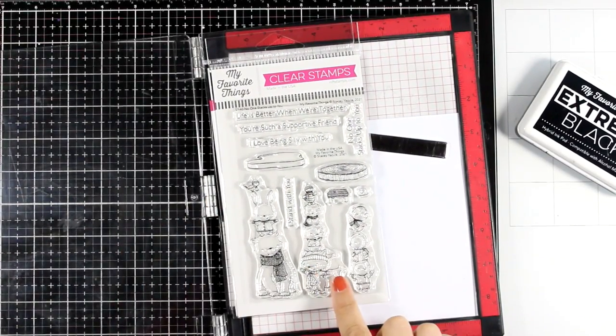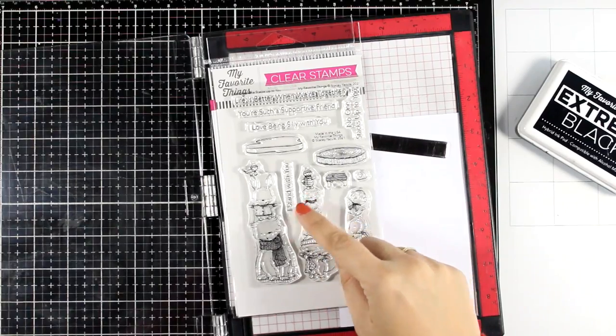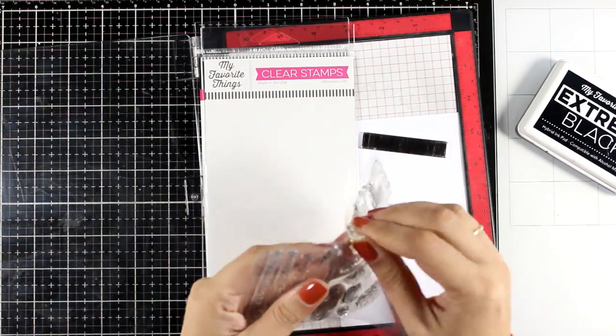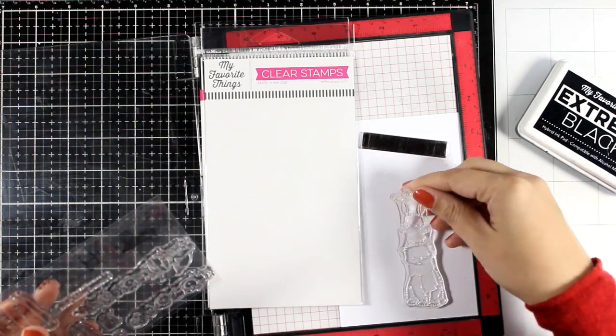For that I'm using a new stamp set by My Favorite Things. It gives you three stacks of critters. I will go with one of them. And the stamp set is called No One Stacks Up To You.